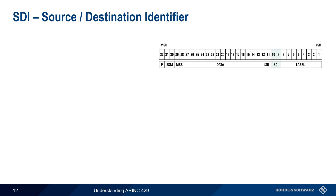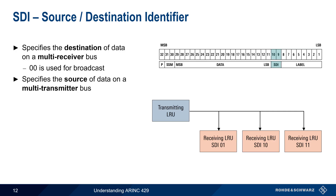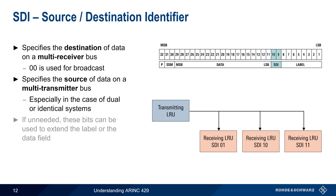Following the label is the 2-bit Source Destination Identifier, or SDI. This field can be used in two ways: first, to identify the destination of data on a bus with one transmitter and multiple receivers, where each LRU has its own identifier and 00 is used for broadcast; or second, to specify the source of data on a multi-transmitter bus, most often used in the case of dual or duplicated systems. The SDI field is not needed in many cases, and these two bits may be used to extend either the label or the data field, although the actual implementation is often proprietary or manufacturer-specific.